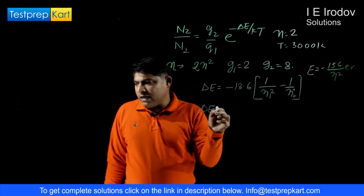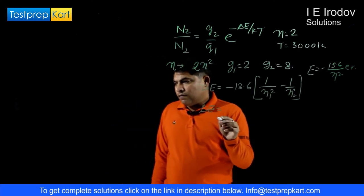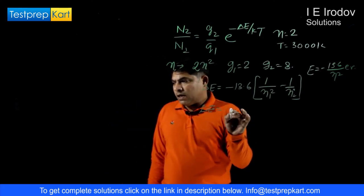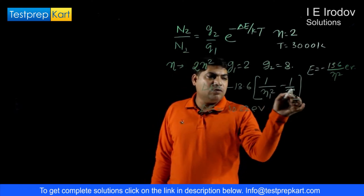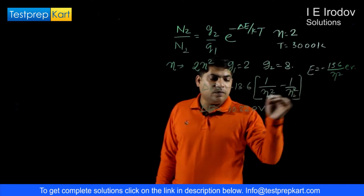So n1 is 1 and n2 is 2, we are intending to find out ratio for quantum number 2. From here we will get delta E which equals 10.22 electron volt. Just put n equals 1 and n2 equals 2.